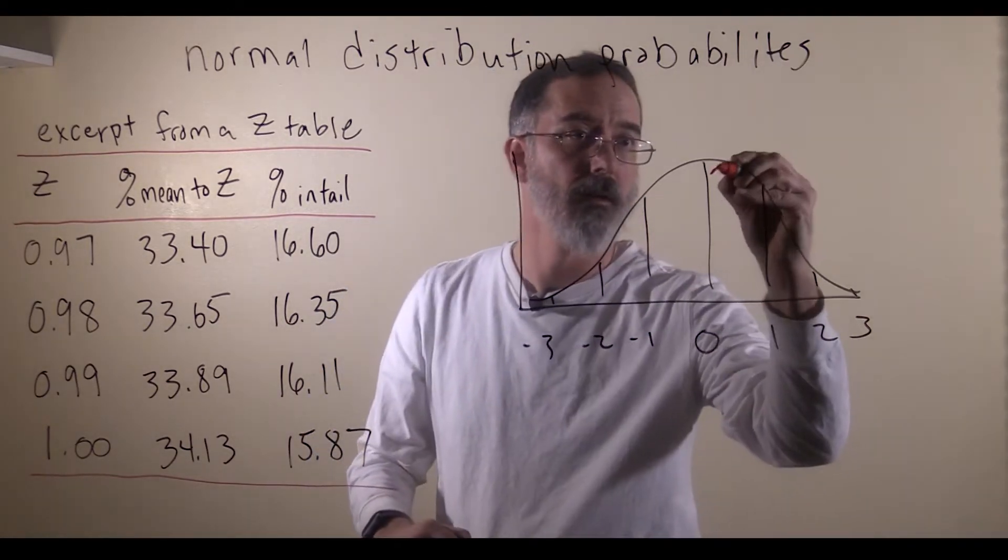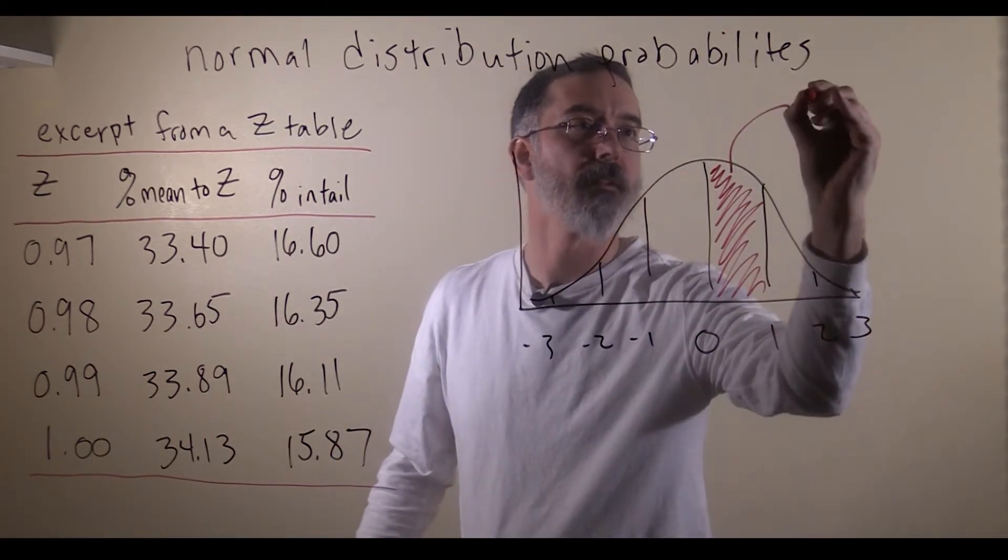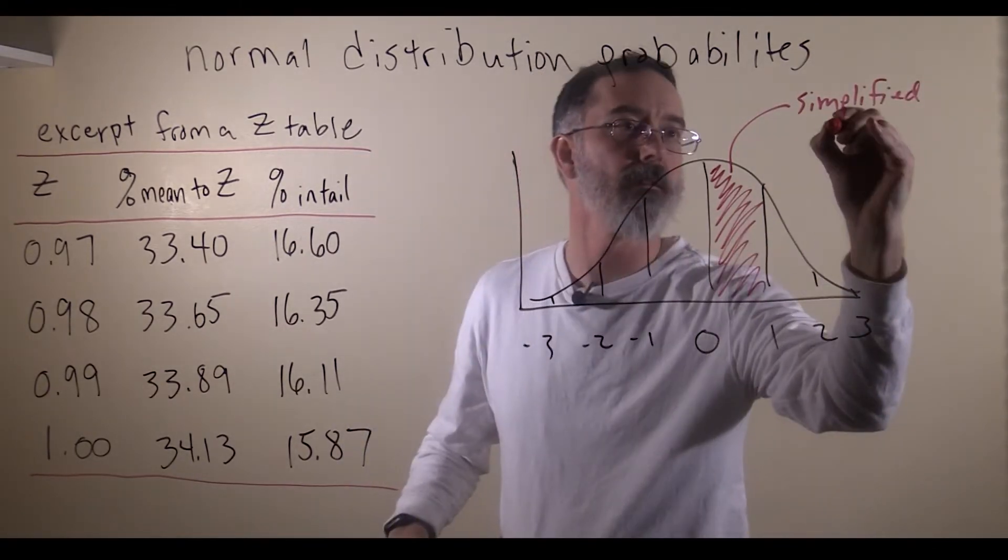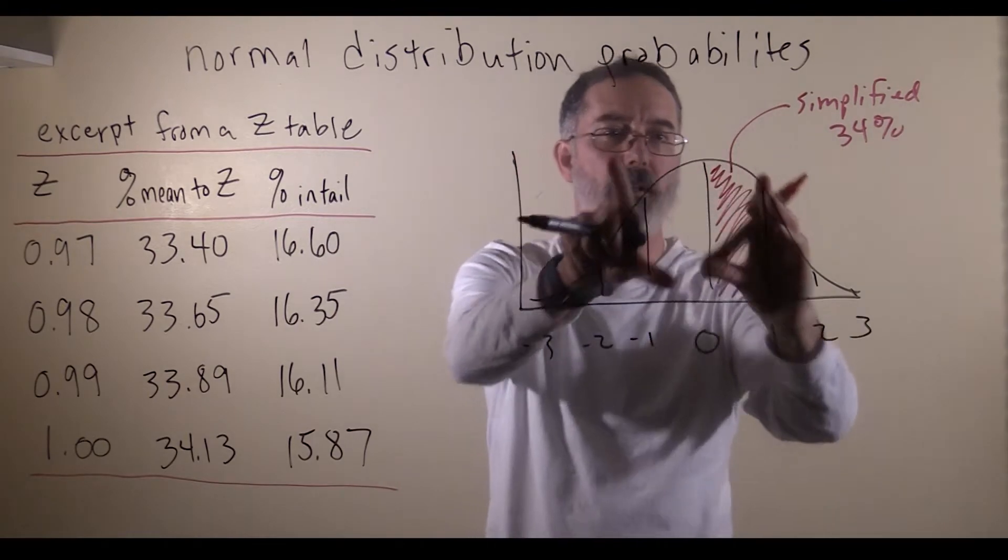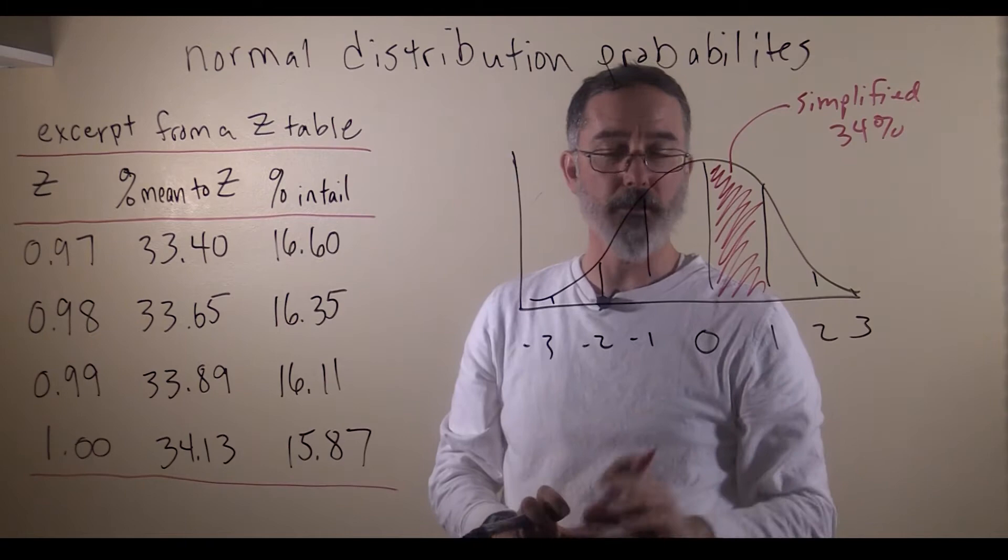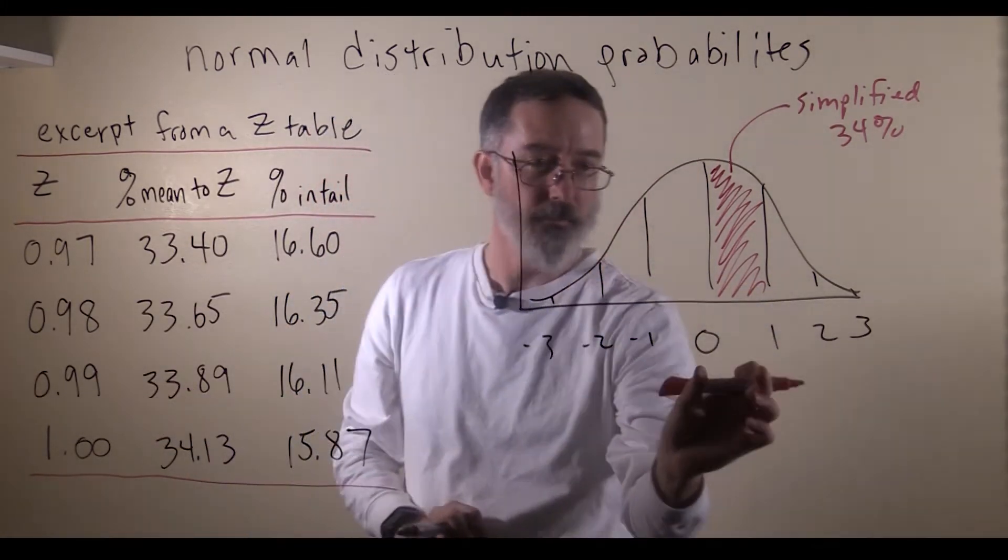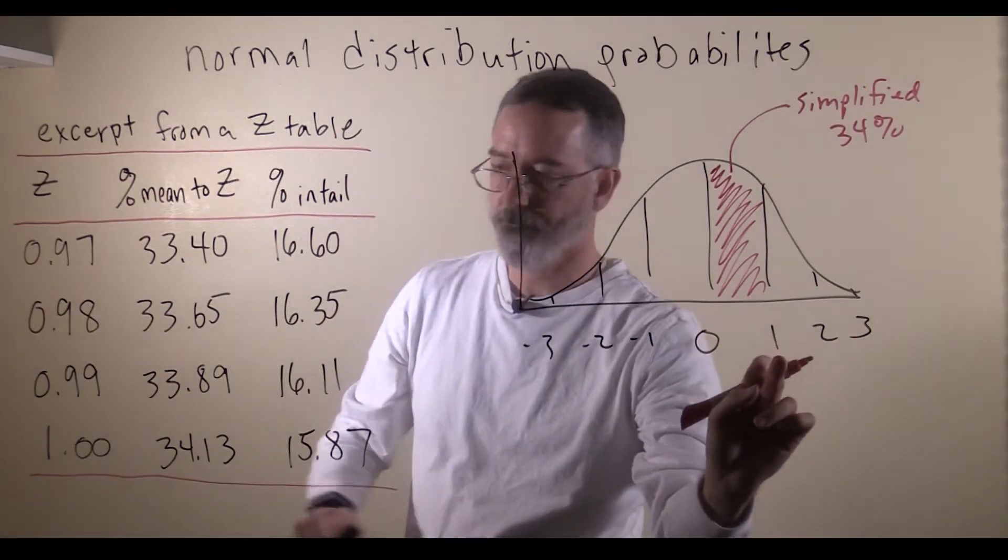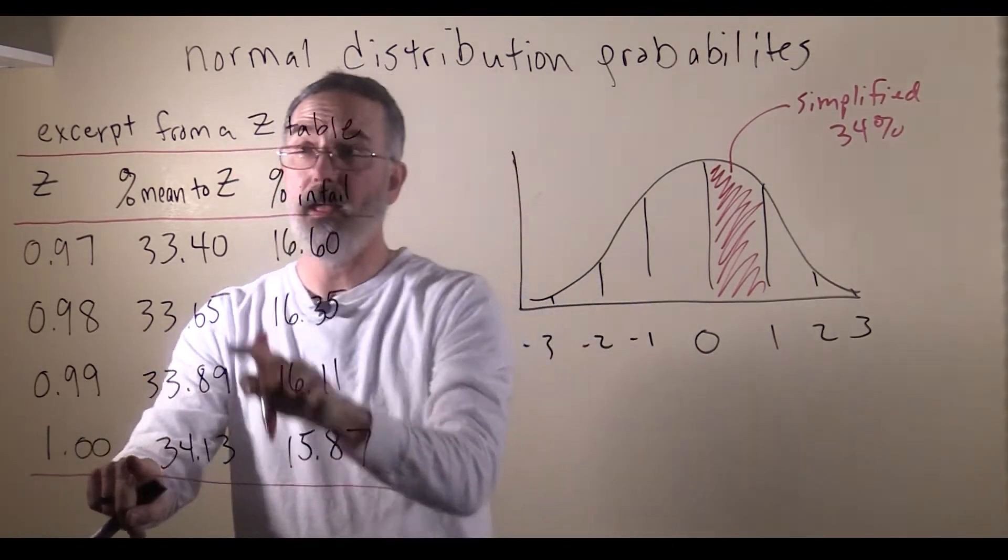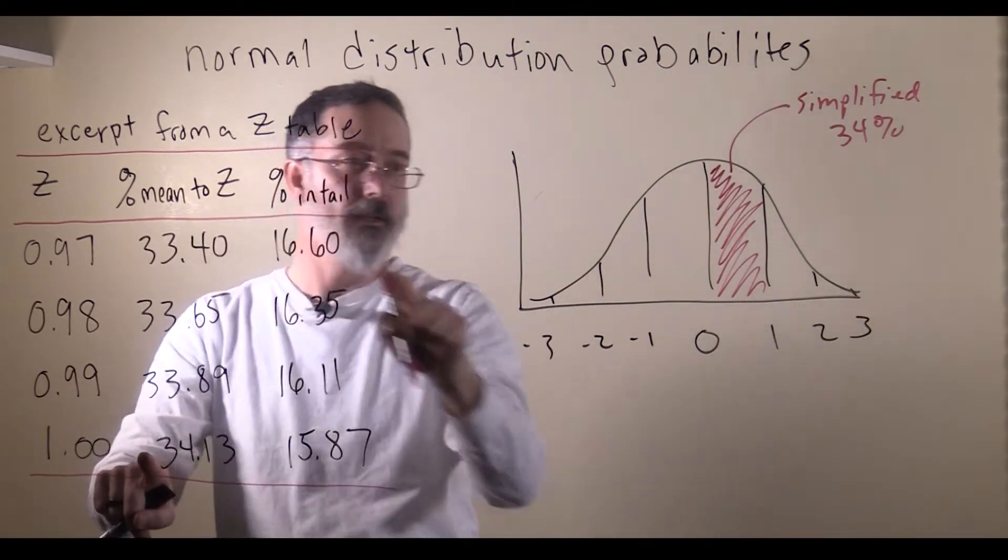Earlier, we talked about how, with the simplified version, we said that there was 34% of the overall area under this curve that was in between 0 and 1. But now, with the more accurate z-table, what we can do is we can find for a z-score of 1.00, we find that 34.13 is the percent in between the mean and that z.